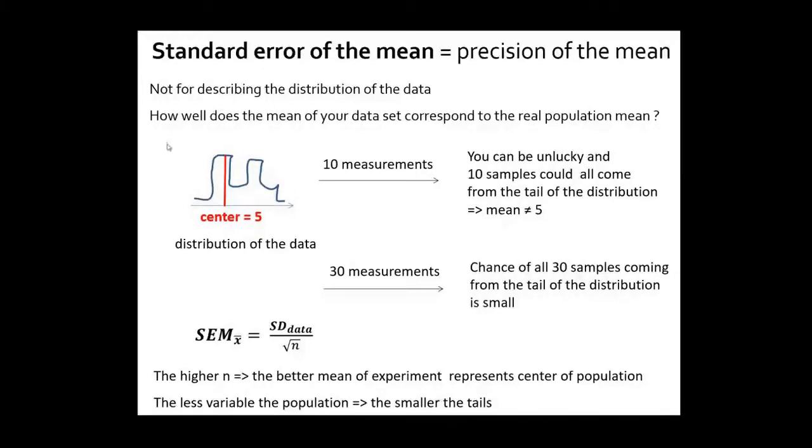Suppose that this is your population, whatever it is, normal or not normal. It will have a center somewhere. Let's say the center is 5. Now I'm doing an experiment and I'm taking 10 individuals from this population randomly. I will get 10 measurements and in many cases the mean of these 10 measurements will be close to 5. But I can also be unlucky and I can draw 10 individuals from this part of the population, and then I get a mean that is much bigger than 5. So it's not a good representation of the population.